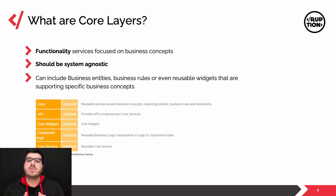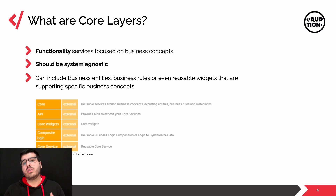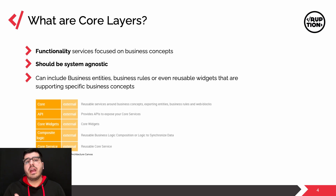As we saw on our first video, we have five types of core layers or sub-layers. We have the core, the API, the core widgets, the composite logic, and the core services.